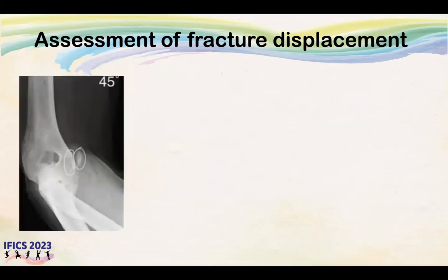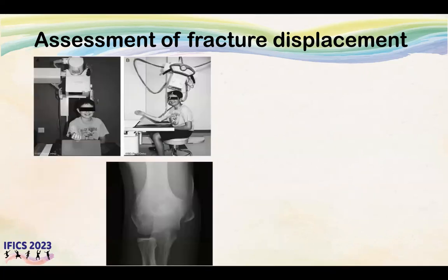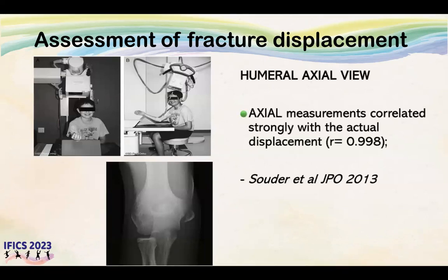However, it is not necessary to obtain a CT scan in every case of medial epicondyle fracture. Some special views can be done. It has been shown that, just like in lateral condyle fractures, a 45-degree internal oblique view gives a fairly accurate assessment of fracture displacement. Also, the humeral axial view has been described specifically for medial epicondyle fractures and gives an accurate assessment of fragment displacement.